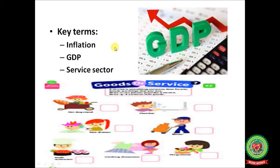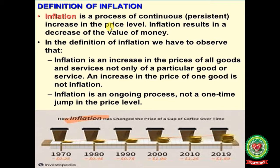Key terms related to the topic: the first one is inflation, then GDP, and services. Inflation means when the circulation of money supply in the economy is more than the production of goods and services in a financial year. With this, the prices of commodities and services will rise and the value of money will decrease. Inflation is a process of continuous increase in the price level and results in a decrease in the value of money. Inflation is an increase in the prices of all goods and services, not only of a particular good or service — an increase in the price of one good is not inflation. Inflation is an ongoing process, not a one-time jump in the price level.